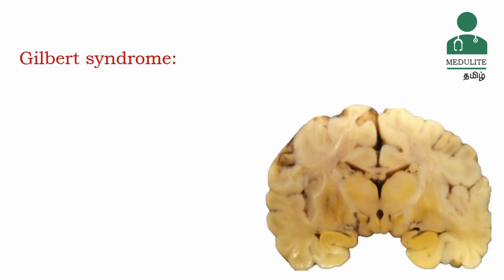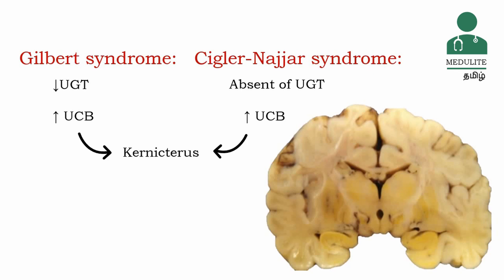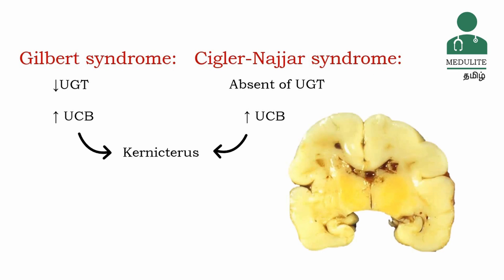Gilbert syndrome is a syndrome involving a decrease in UGT enzyme activity. With decreased enzyme activity, non-conjugated bilirubin levels rise. In this condition, the non-conjugated bilirubin level is elevated. Kernicterus is a serious cause — the bilirubin deposits in the basal ganglia region of the brain, causing brain complications. This is also associated with bile duct occlusion.